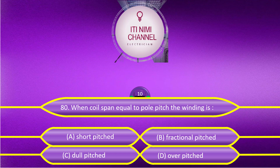Which type of winding pitch includes: Option B, Fractional Pitched; Option C, Full Pitched (also known as Chorded Pitched); Option D, Over Pitched. The answer is Option C, Full Pitched.